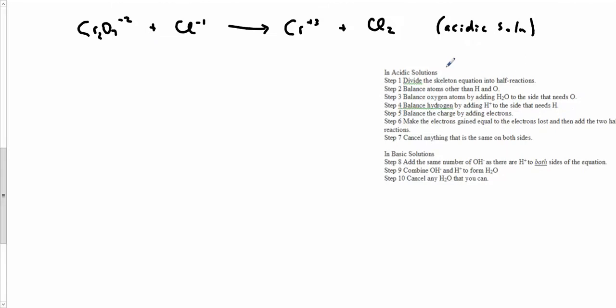So divide it into half-reactions. I have two half-reactions. It looks like Cr2O7 is turning into Cr plus 3, and Cl minus is turning into Cl2. Balance for atoms other than O and H. I have two Crs, looks like I need... let's put a 2 here and I need a 2 here.